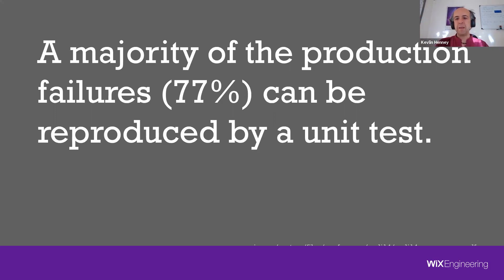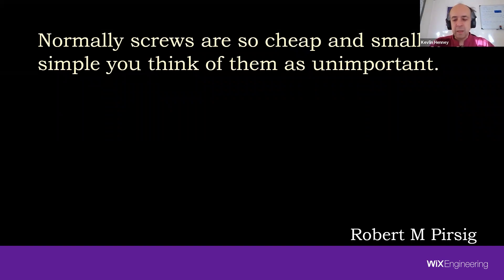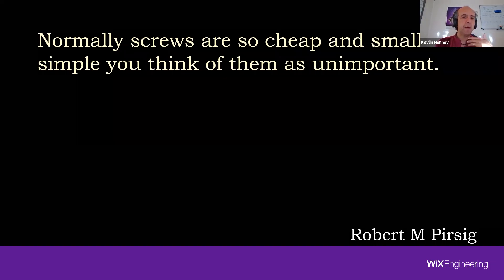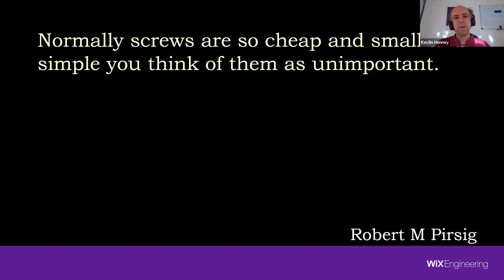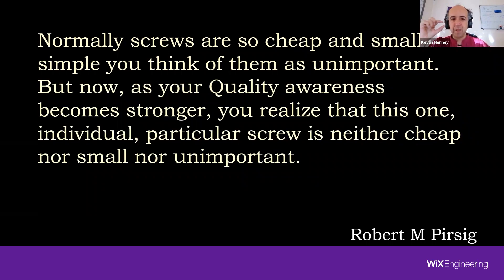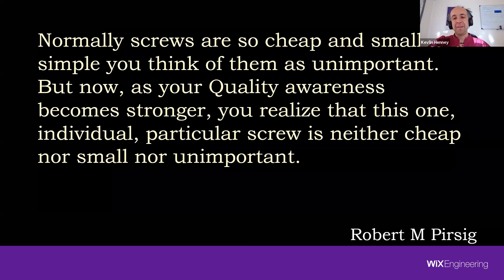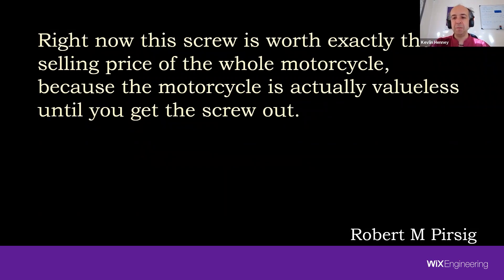Sometimes we're so focused on the big picture we forget the details — but details matter. As Robert Pirsig wrote in Zen and the Art of Motorcycle Maintenance: 'Normally screws are so cheap and small and simple you think of them as unimportant. But now as your quality awareness becomes stronger you realize this one individual particular screw is neither cheap nor small nor unimportant. This is a screw that is stuck in the engine right now. This screw is worth exactly the selling price of the whole motorcycle, because the motorcycle is actually valueless until you get this screw out.'